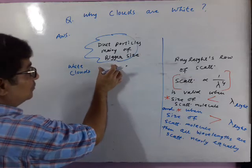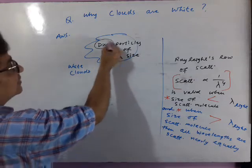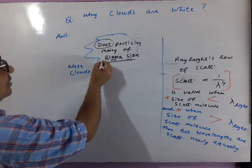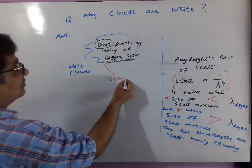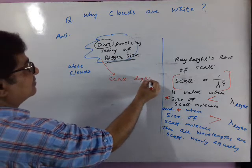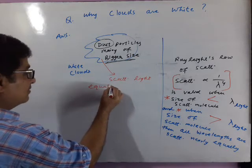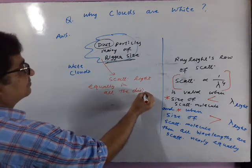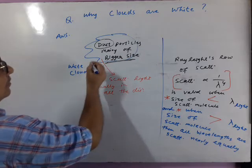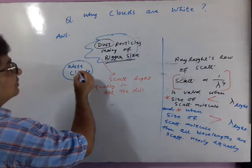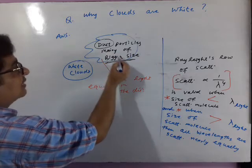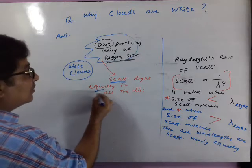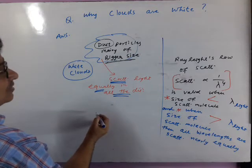Jho cloud jinkai andar hongi dust particles bade size ke scatter light equally in all the directions. See, since white clouds are containing dust particles of bigger size, they are scattering light equally in all the directions. Now, which light?